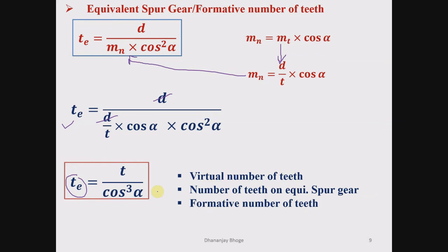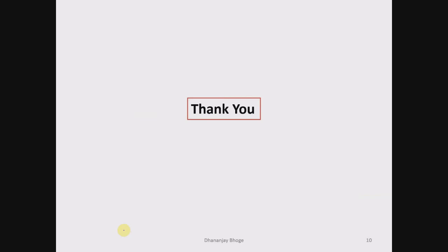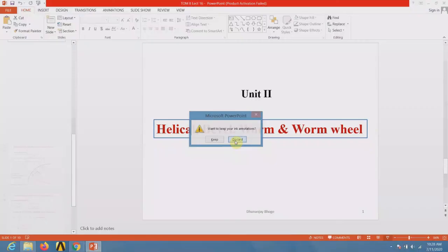tE equals t divided by cos³(alpha). Here t is the number of teeth on the helical gear and alpha is the helix angle. tE is the number of teeth on the equivalent spur gear in the normal plane. We also call this the virtual number of teeth or the formative number of teeth. This concept is used only for analytical calculations.